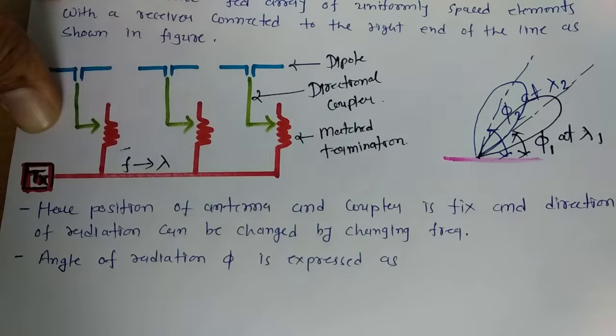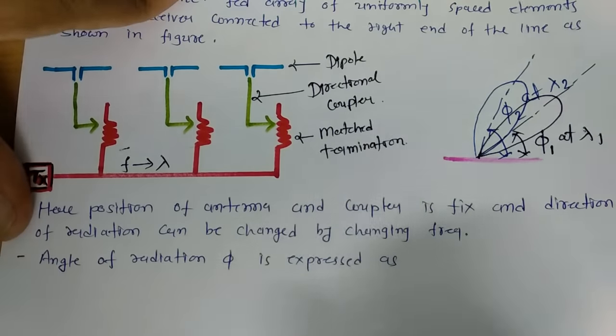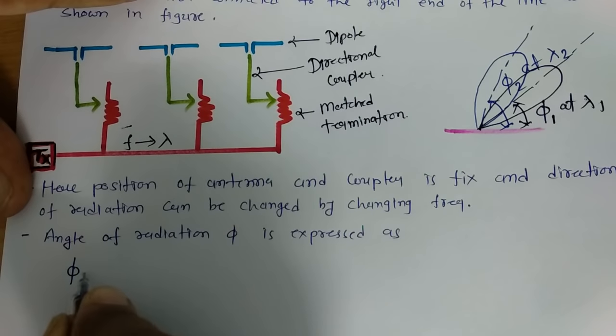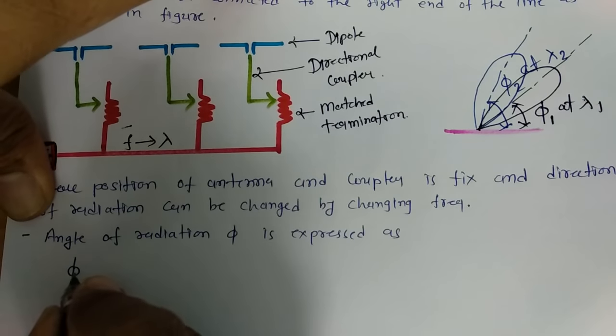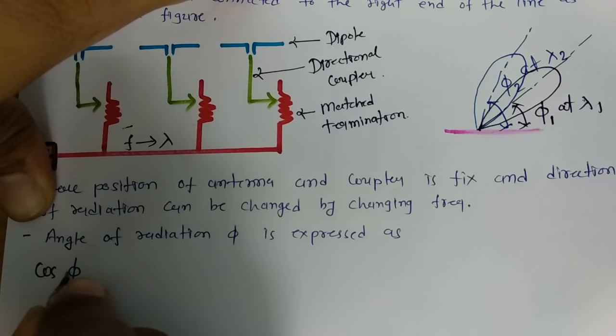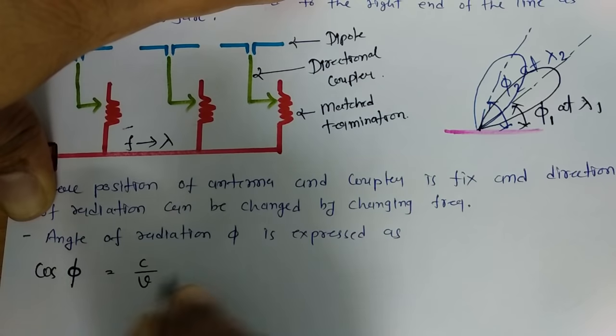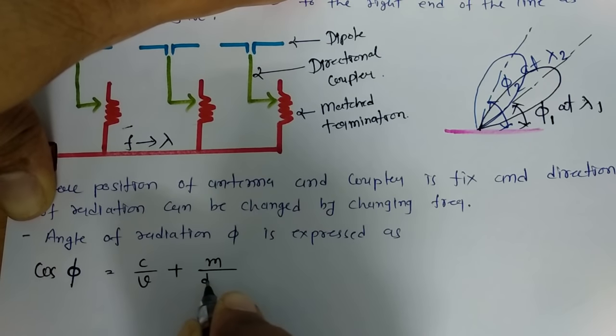Here, angle of radiation that is expressed as phi. We can say angle of radiation as per Dolph-Chebyshev array that could be explained by cos(φ) = C/V + M/(D/λ).